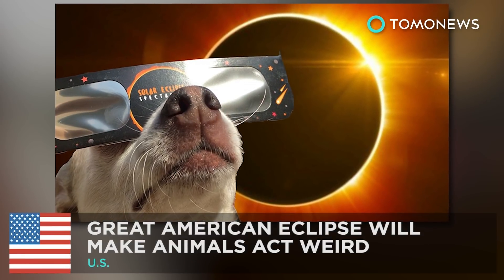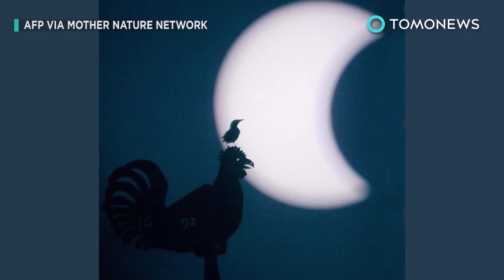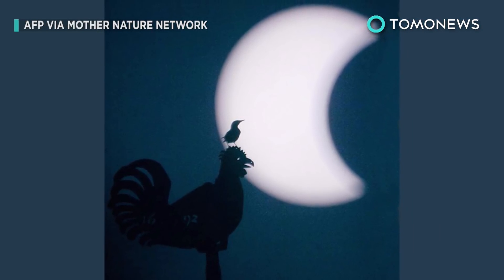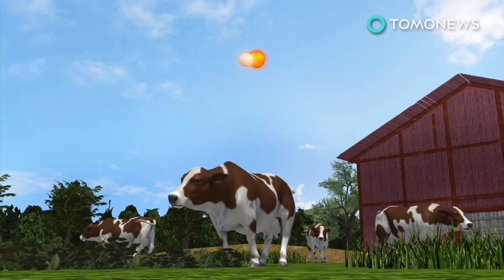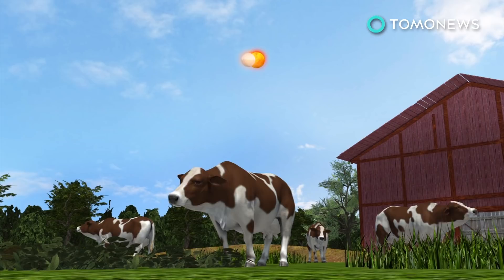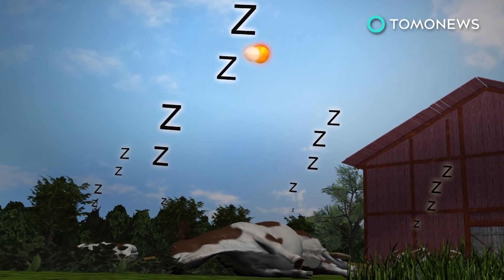Mother Nature is about to totally freak out. Animals are going to act weird when a total solar eclipse passes over the United States later this month. Scientists say when the Moon begins to move between the Sun and the Earth, we could see hooved animals lying down and hear songbirds fall silent.